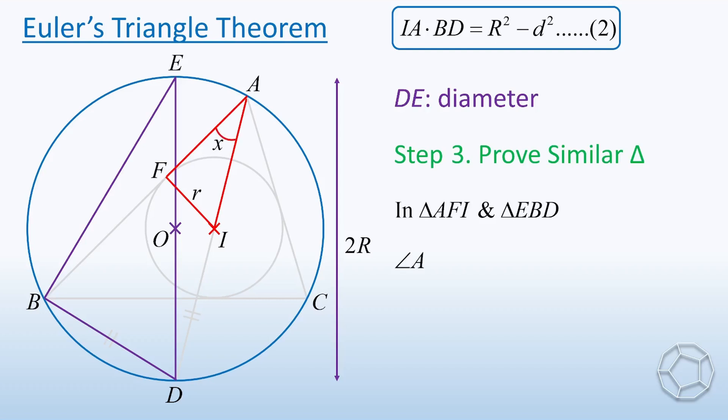First of all, angle A and angle E are both equal to X because of angles in same segment again. For the second pair, angle F is equal to 90 degrees because of tangent perpendicular to radius.